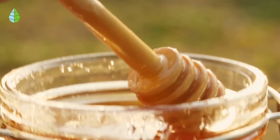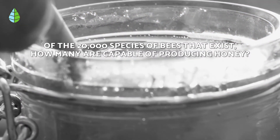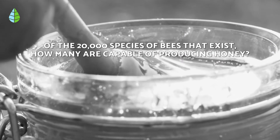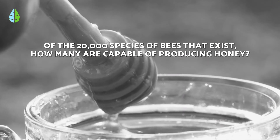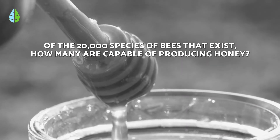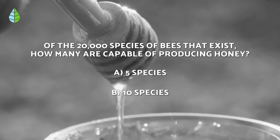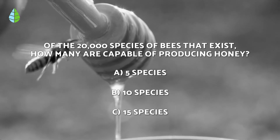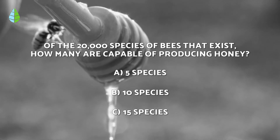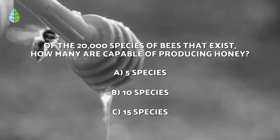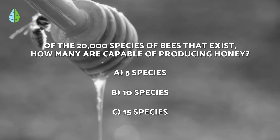Before we continue, we will put you to the test. Of the 20,000 species of bees that exist, how many are capable of producing honey? Five species, ten species, or fifteen species? Think about it carefully, because at the end of the video you can check if you were right.